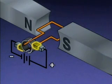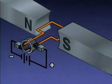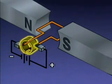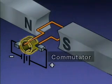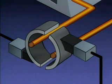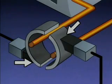These two components are called brushes. The brushes are connected to a DC power source. A conducting ring, known as a commutator, is mounted on the end of the armature. The commutator is not a solid ring; it consists of conducting segments that are separated from each other.